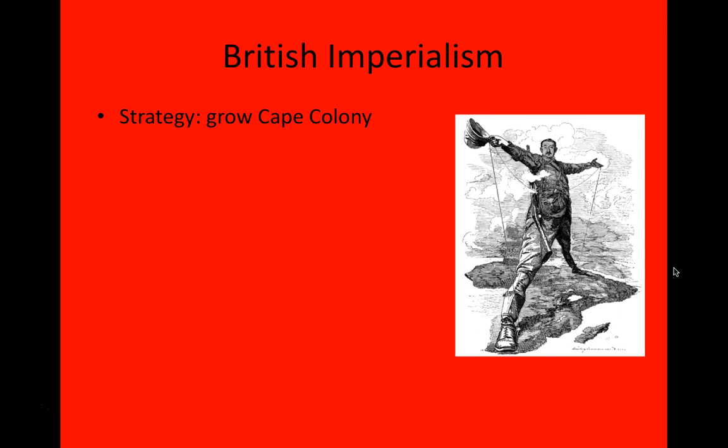This is Rhodes with one foot in the Cape and the other one in Egypt. His vision for British control of Africa was Cairo to the Cape — spanning the entirety of the continent. This image is called the Colossus of Rhodes, an imitation of the ancient statue spanning the harbor of the city of Rhodes — one of the seven wonders of the ancient world. Rhodes has now become the new Colossus.